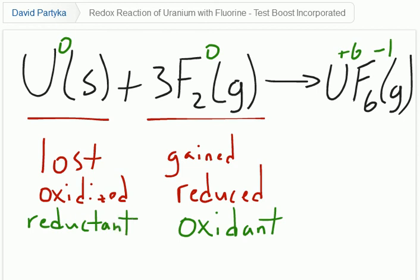So, the combination of uranium and fluorine gas results in the oxidation of uranium, the reduction of fluorine, to form uranium hexafluoride.